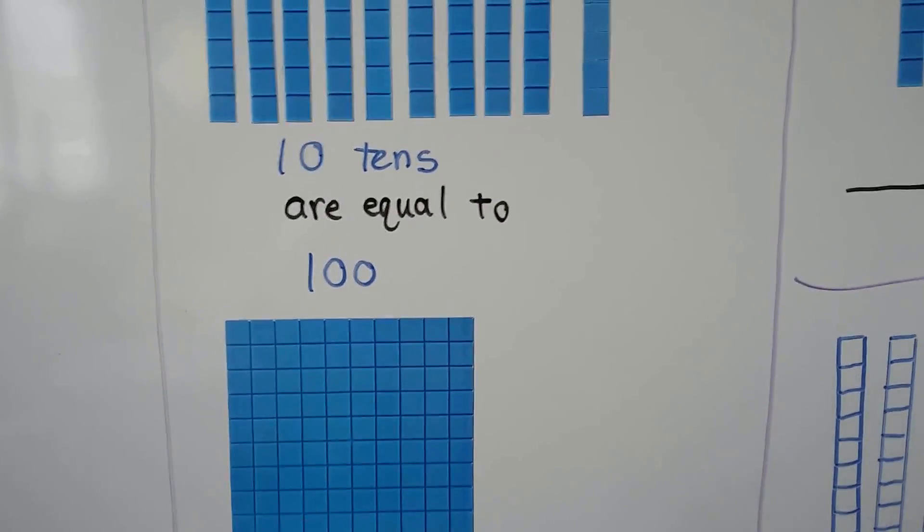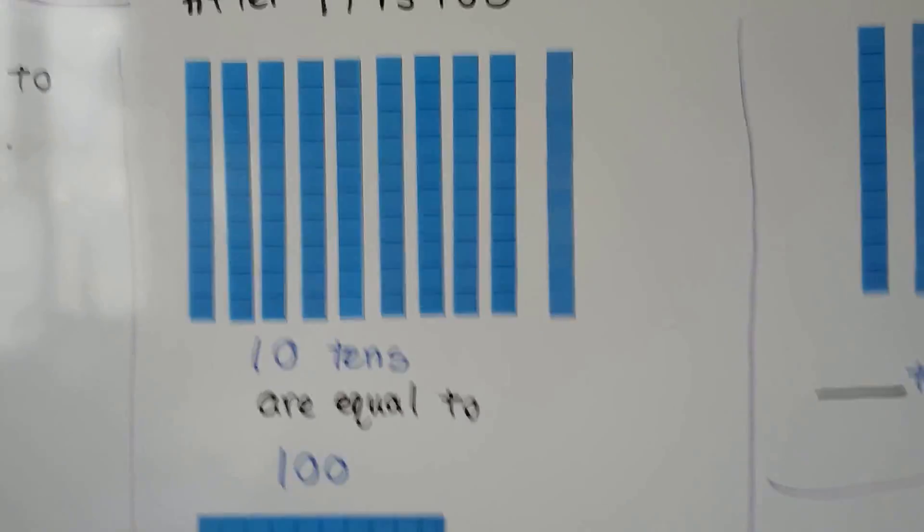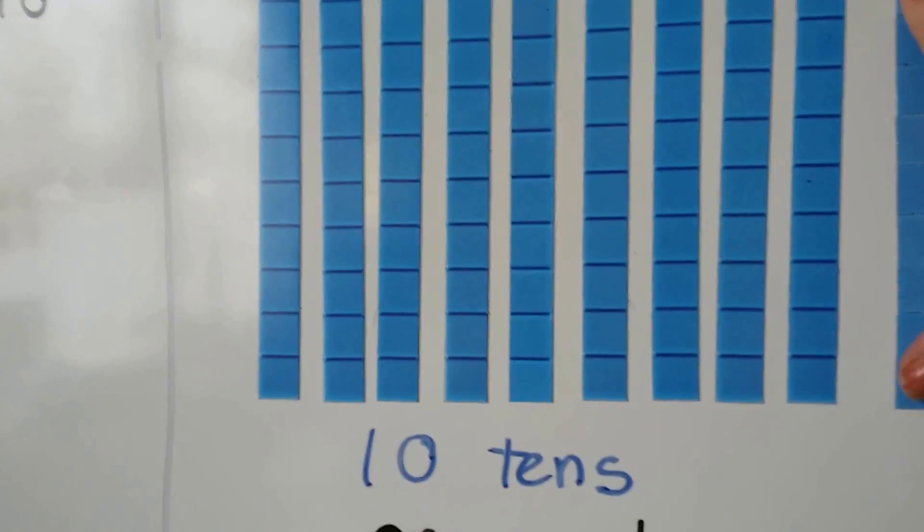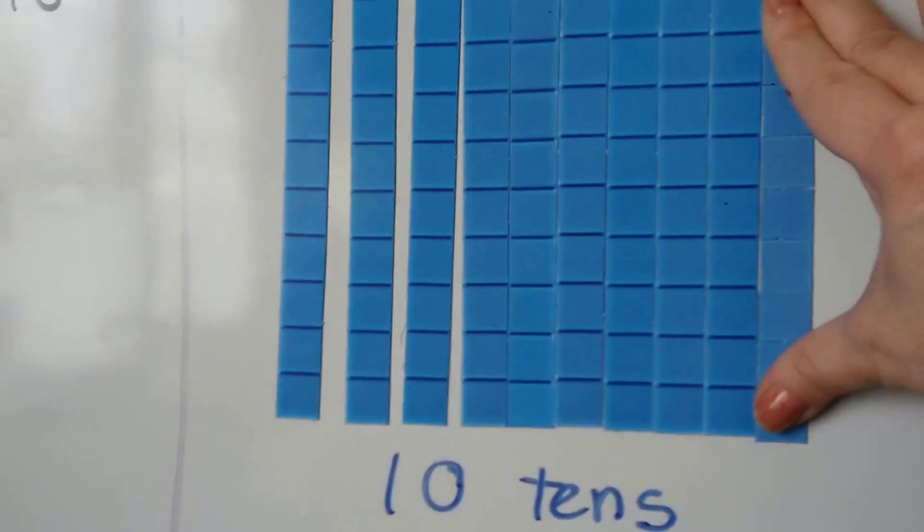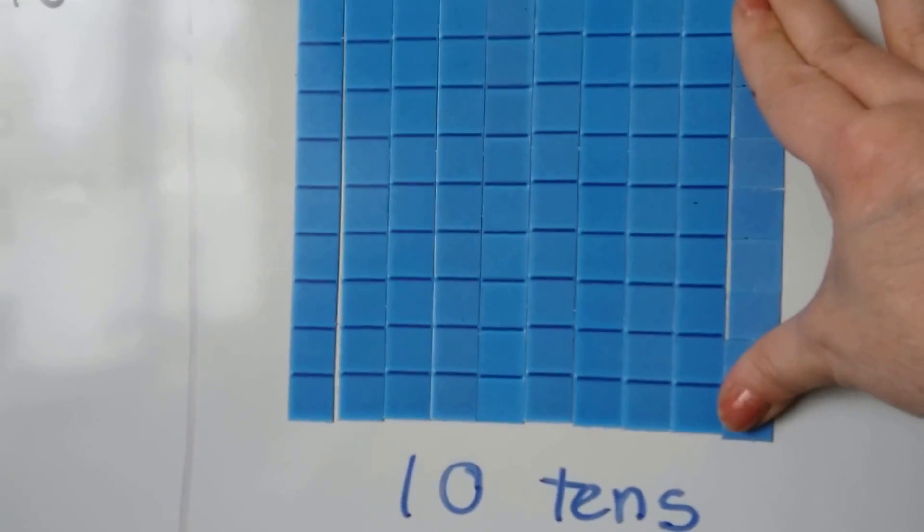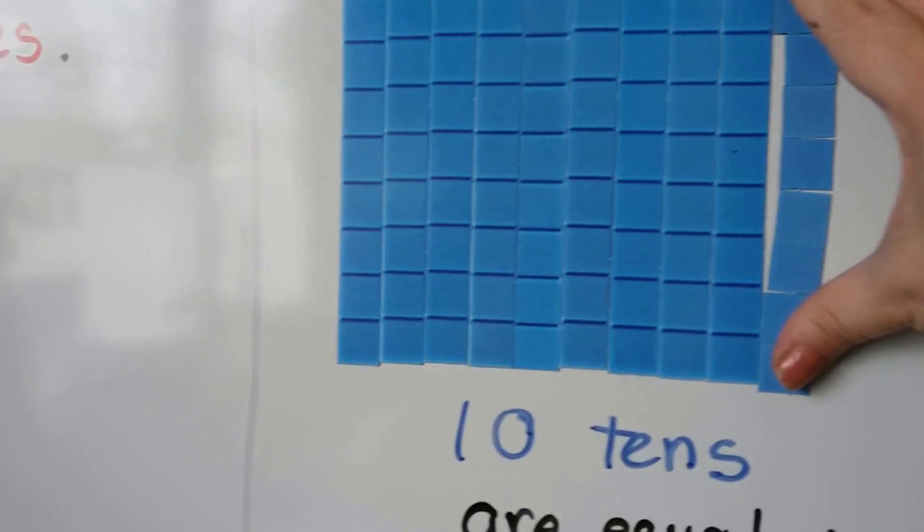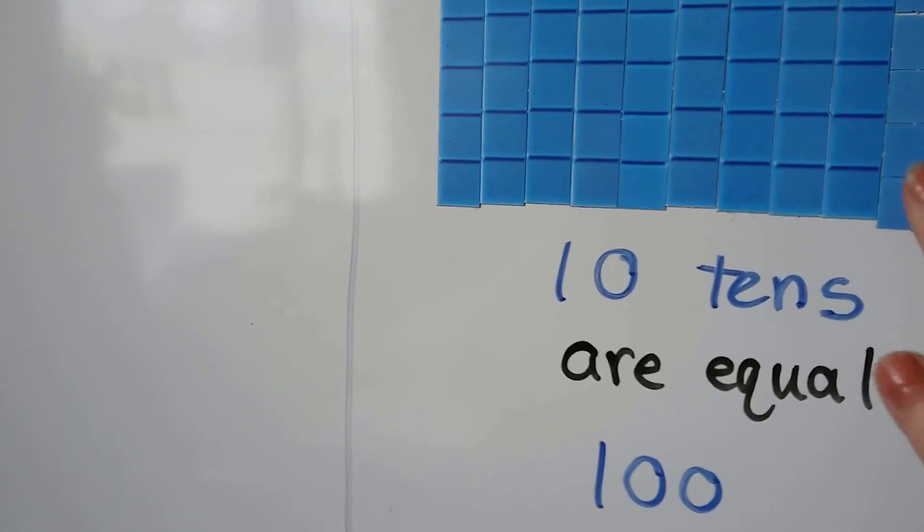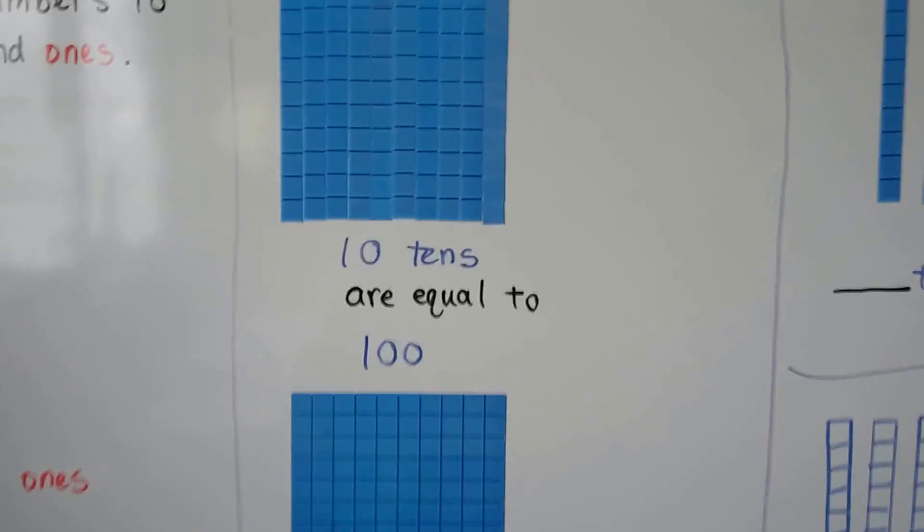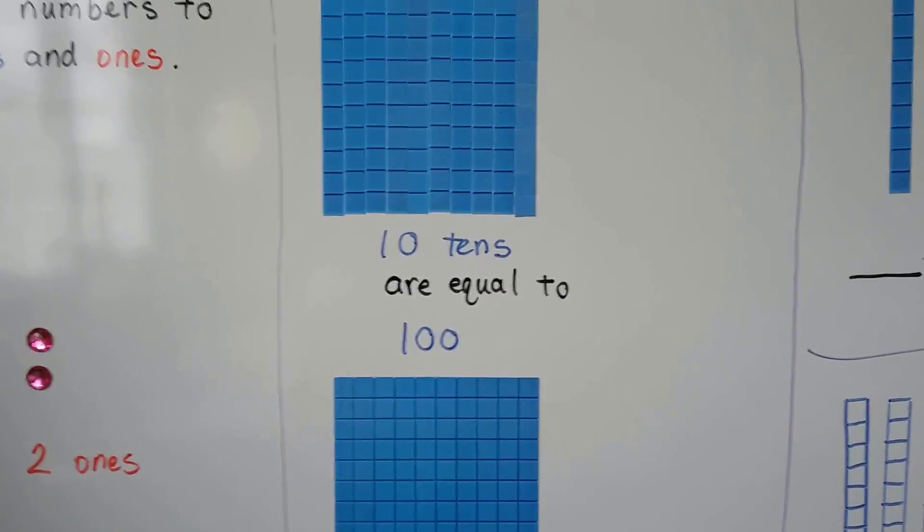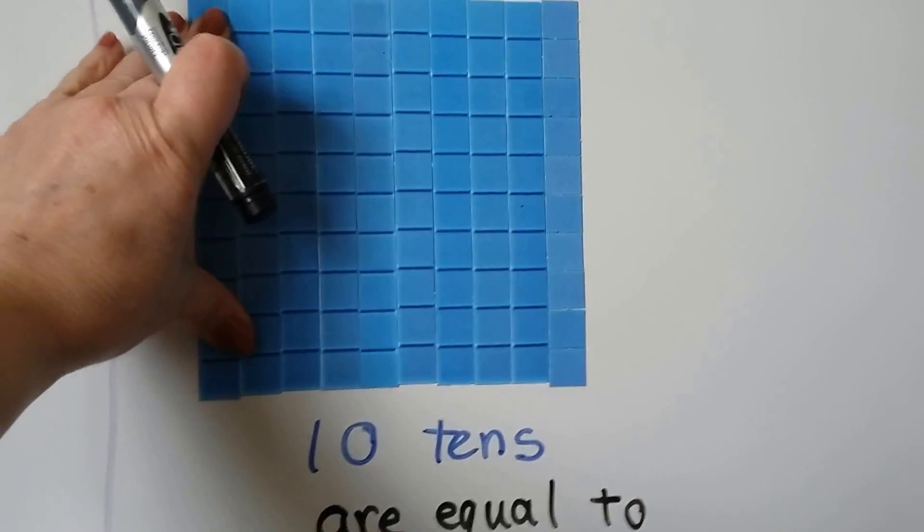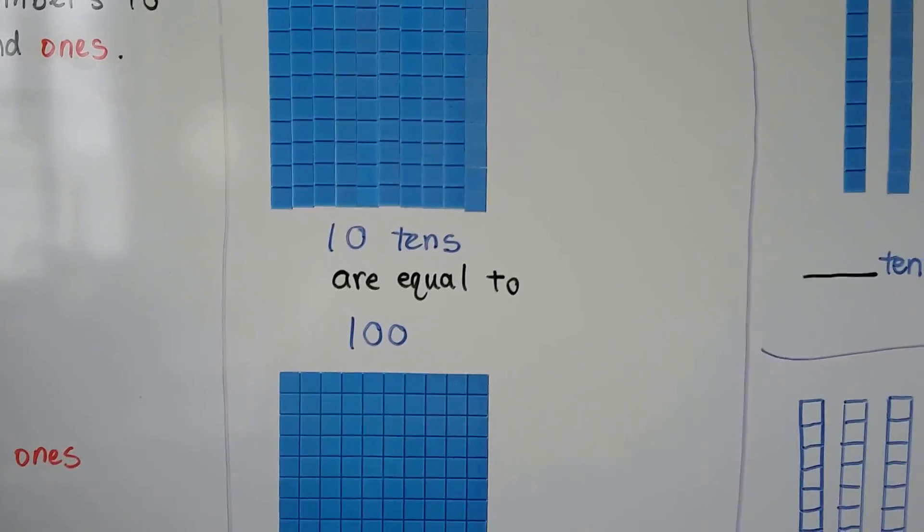These 10 tens are equal to a flat of 100 units. I can move these units together. See if we can move these together nice and neatly. We'll squish them all together. And if you look, it's the same as this one. We had 10 tens that we moved together and it's the same as 100.